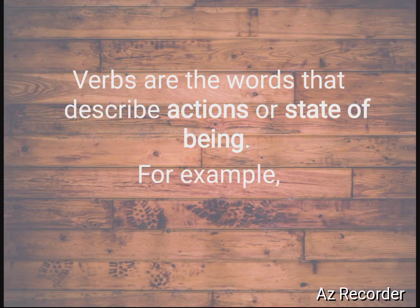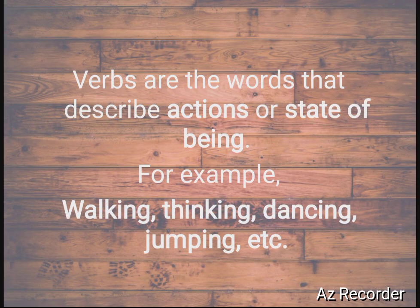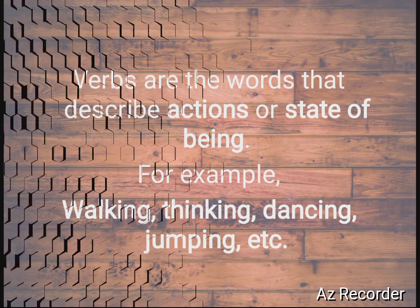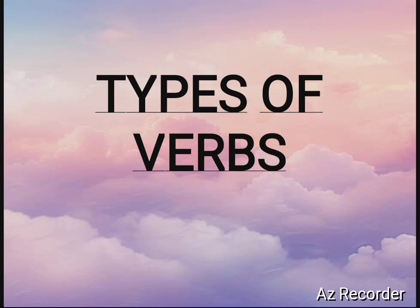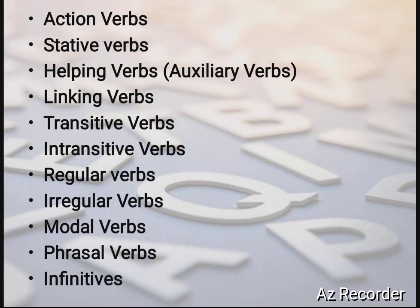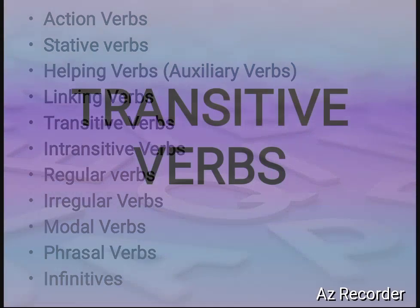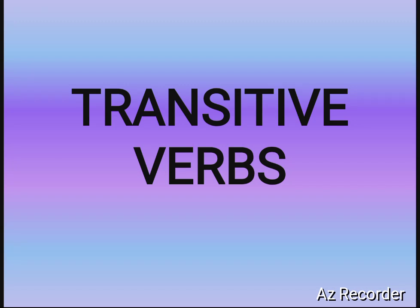For example: walking, thinking, dancing, jumping, etc. Now, the next topic is types of verbs. We have learned 11 types of verbs which we studied in detail. Let us revise the different types of verbs: action verbs, stative verbs, helping verbs, linking verbs, and there are other types of verbs.